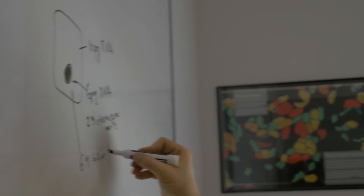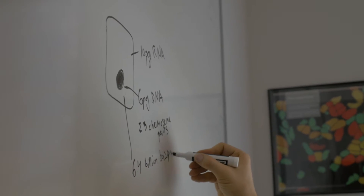Now, in that nucleus, there are also 23 pairs of chromosomes, and there are also 6.4 billion base pairs of DNA. So that's a whole lot of information. A cell is about 10 microns or micrometers across.